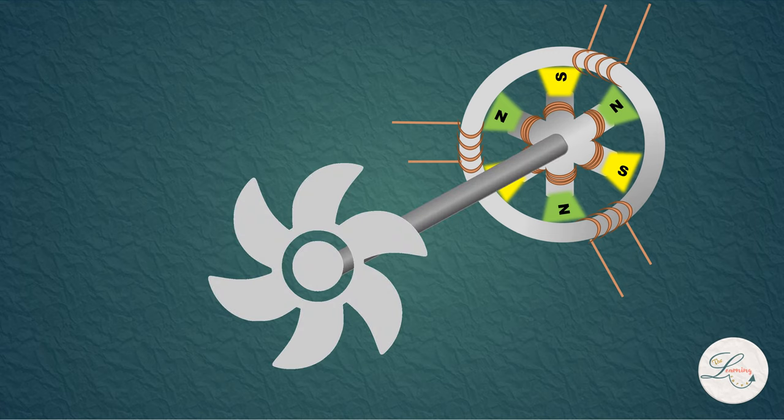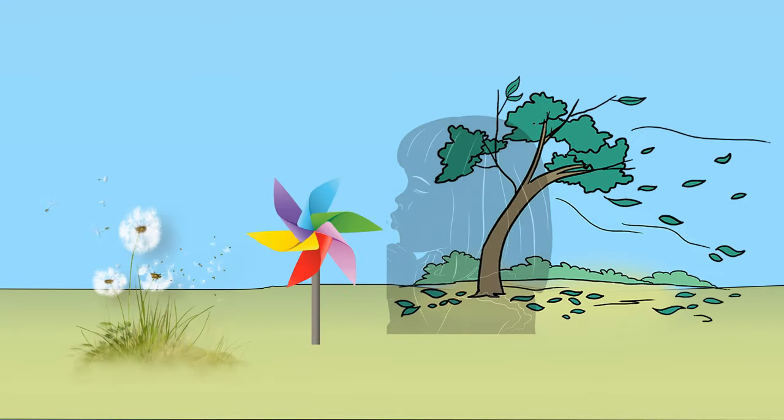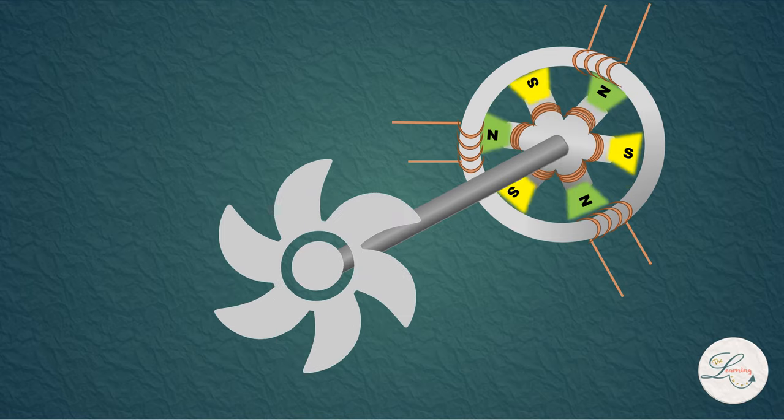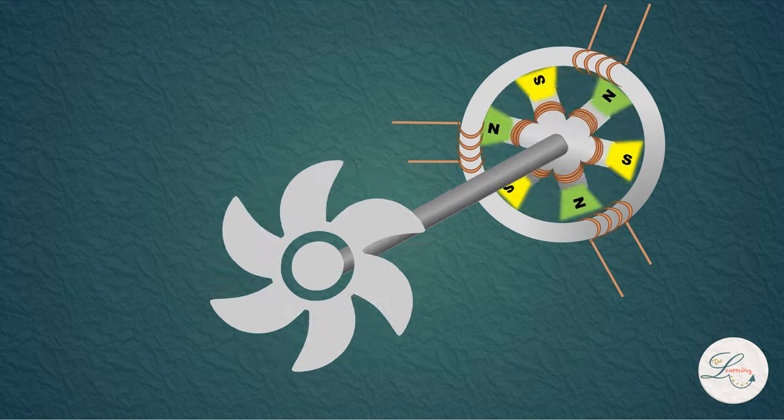For better understanding, we can compare this with a pinwheel. The pinwheel spins when blown upon by a person or by a wind. Similarly, this turbine spins with the help of steam, water, or wind. Now, if we connect the shaft of this turbine with the rotor, then as the turbine spins, the rotor will also rotate.